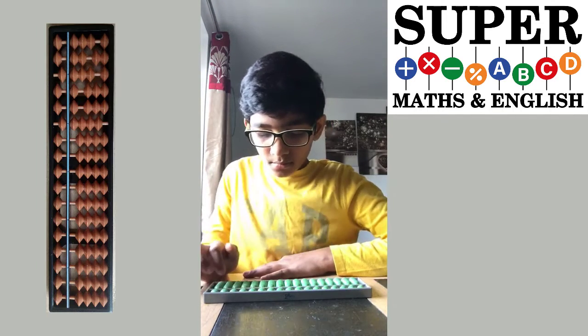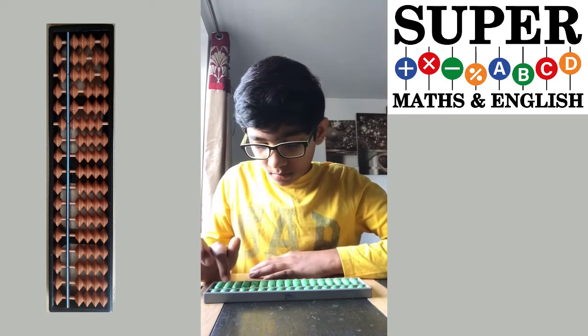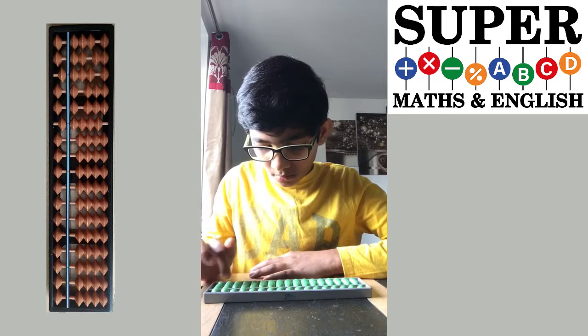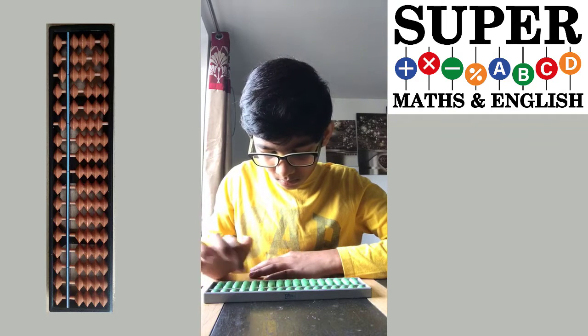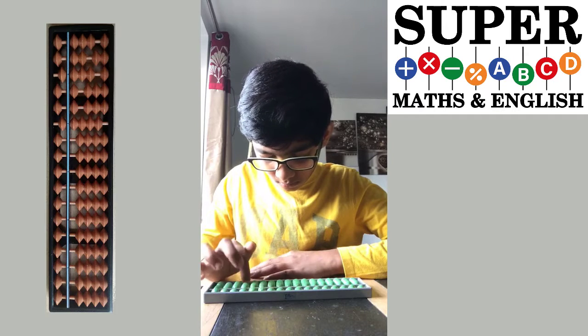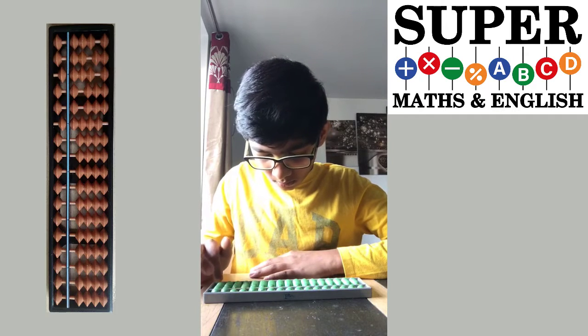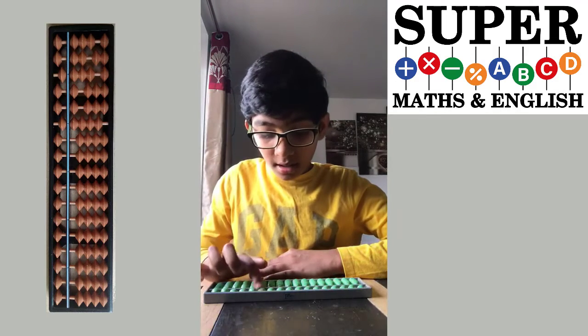Correct. Decimals: 15.68 plus 23.54 plus 346.25 plus 178.32. Answer: 563.79. Correct. Next.